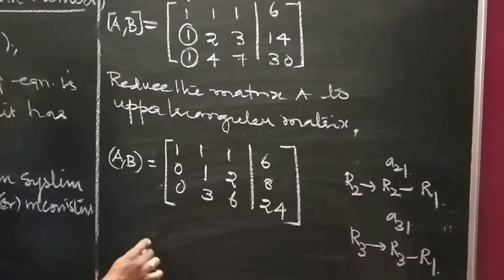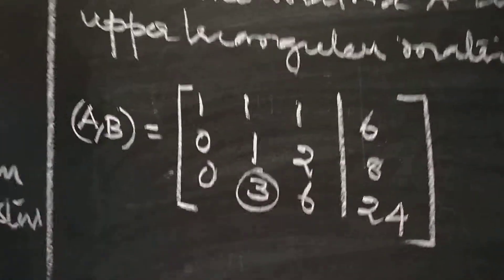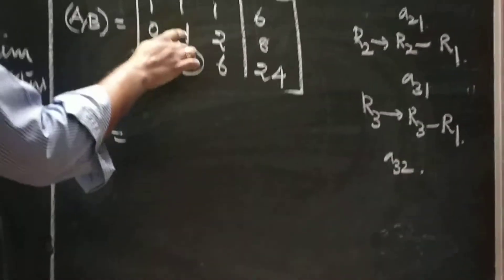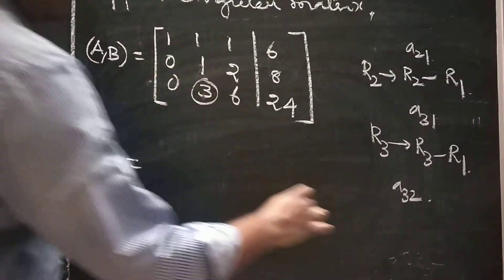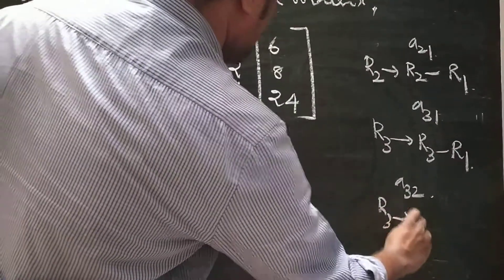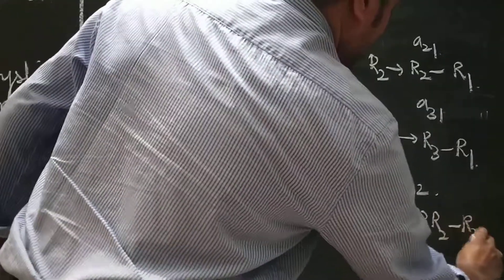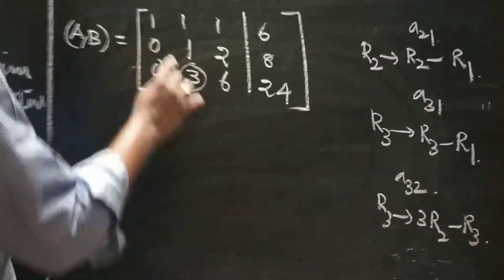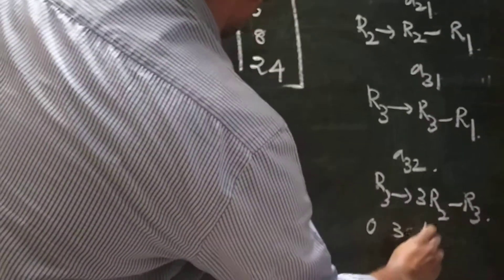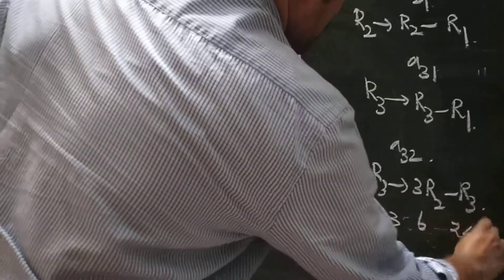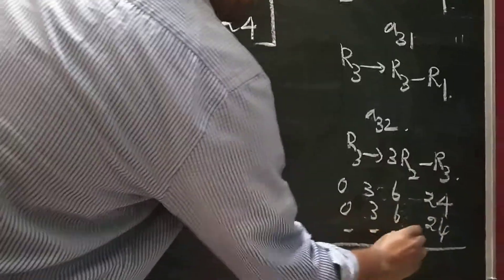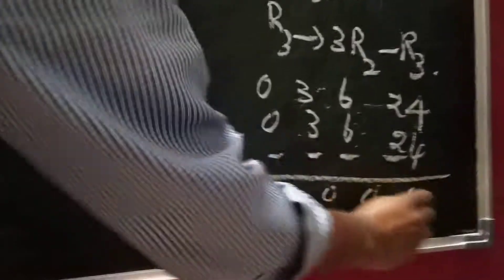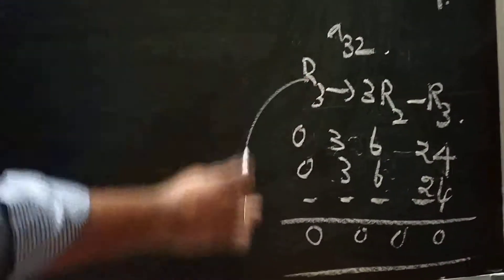Next, make A(3,2) equal to 0. Use the second and third rows. Here element is 3 in R3 and 1 in R2, so apply R3 implies 3R2 minus R3. Second row multiplied by 3 gives [0, 3, 6, 24]. Third row is [0, 3, 6, 24]. Subtracting gives [0, 0, 0, 0]. So the third row is all zeros.